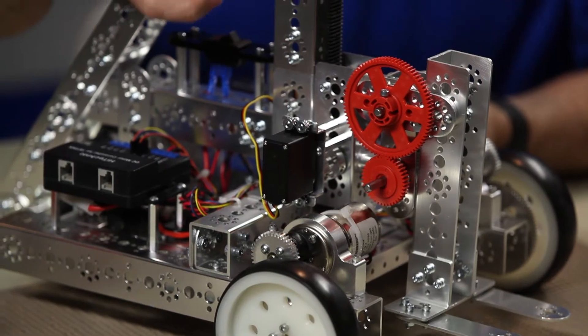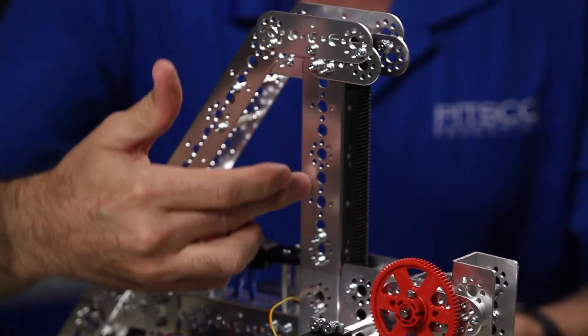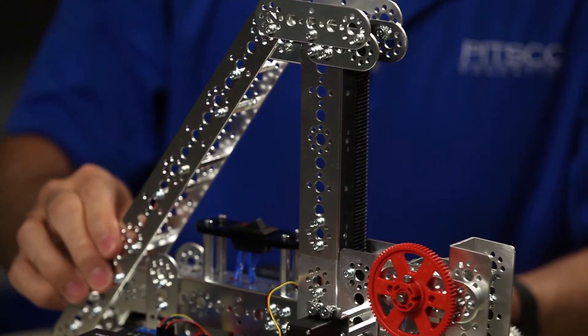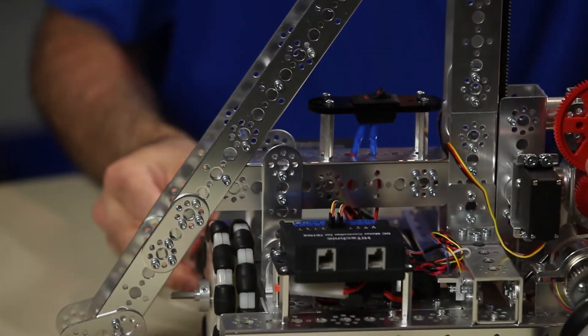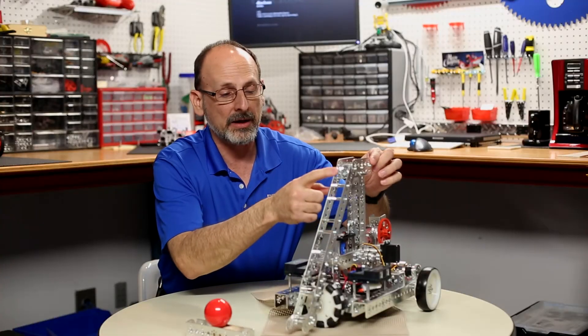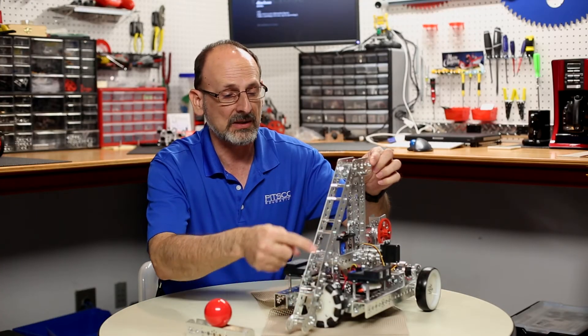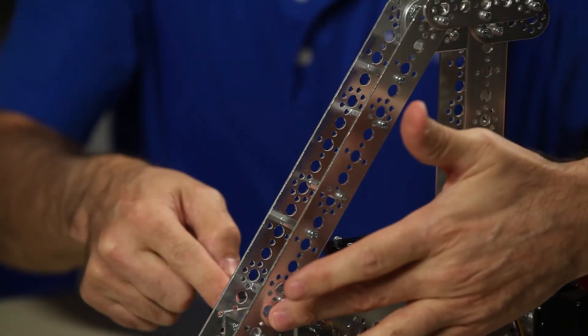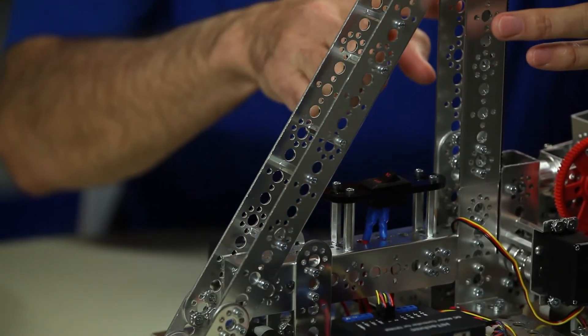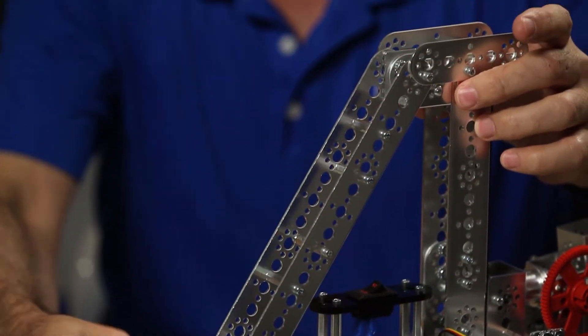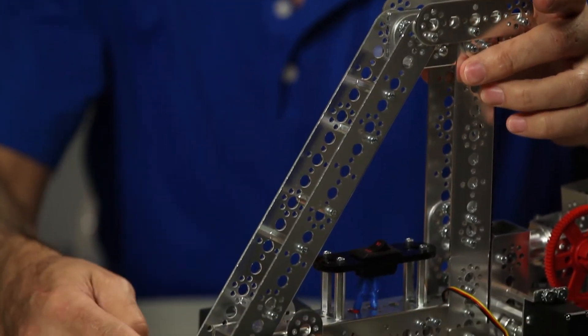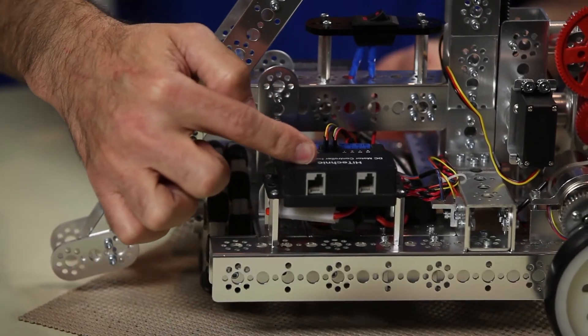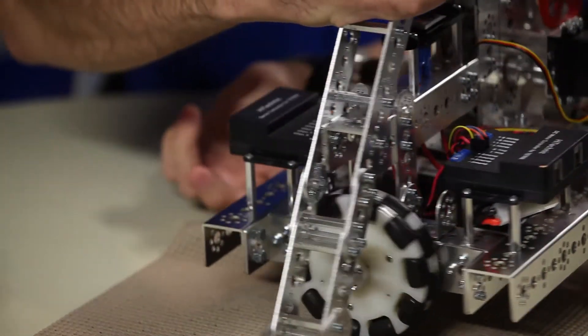I've got our typical Tetrix C channel that provides a very robust, sturdy frame. Then I also have a lot of the flat bar pieces. You can see with this specific piece that I've created my own channel in the same size alignment as our basic channel, just on the outside of that, with our 32 millimeter spacers.